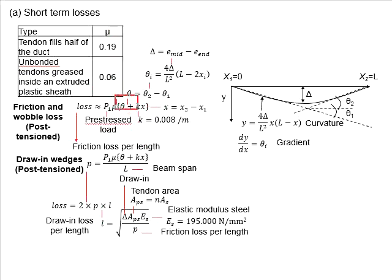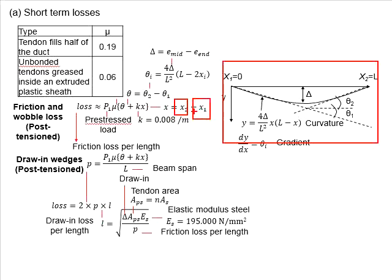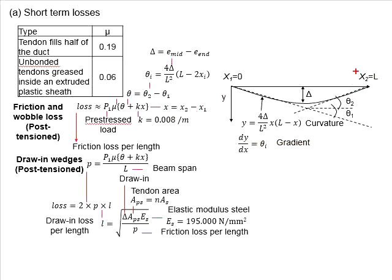And within the function here, there is theta k and x. The k here is a constant number, which is assumed to be 0.008 per meter. And the x here represents the total length of the tendon, which in this case is defined by x2 minus x1, representing the locations of the tendon.